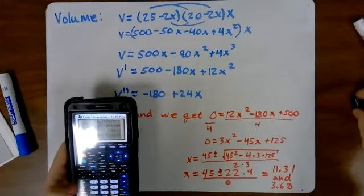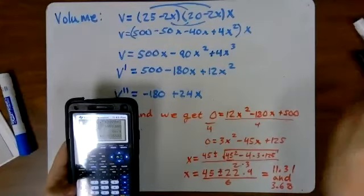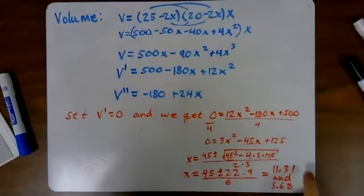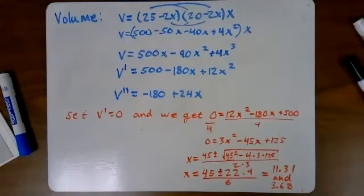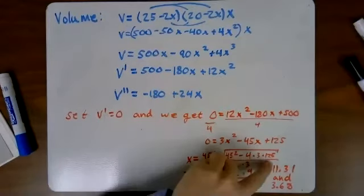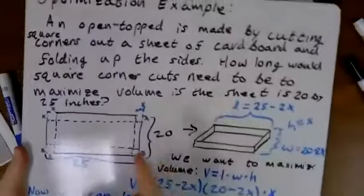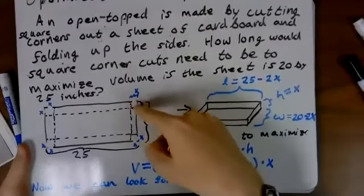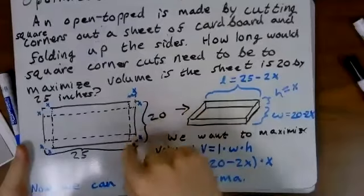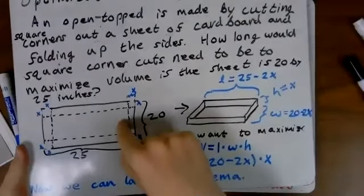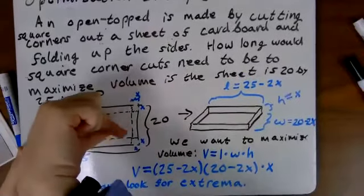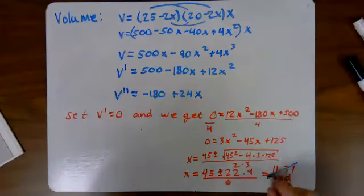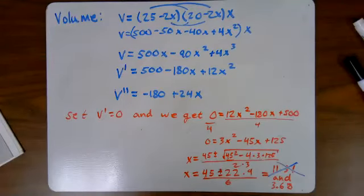Okay, so those are the cuts that give us maxima and minima. So now something that is a little bit weird here is that one of these cuts is impossible. 11.31 can't be done. Let's take a look at our diagram. If we make a cut 11 point something inches wide, the absolute maximum length for a cut would be 10 inches because that's the amount it would take for me to go from here to the center. If I did 11.25, then the cuts would overlap themselves. So this 11.31 is impossible.